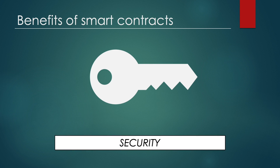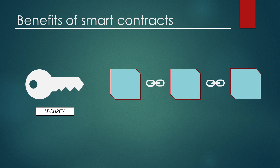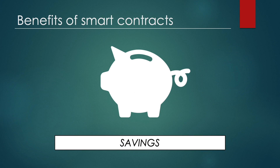One more advantage, and this is probably the biggest one, is security. Blockchain transaction records are encrypted, which makes them very difficult to hack. Moreover, because each record is connected to the previous and subsequent records on a distributed ledger, hackers would have to alter the entire chain to change a single record. A final benefit of smart contracts is its savings. Smart contracts remove the need for intermediaries to handle transactions and by extension their associated time delays and fees.